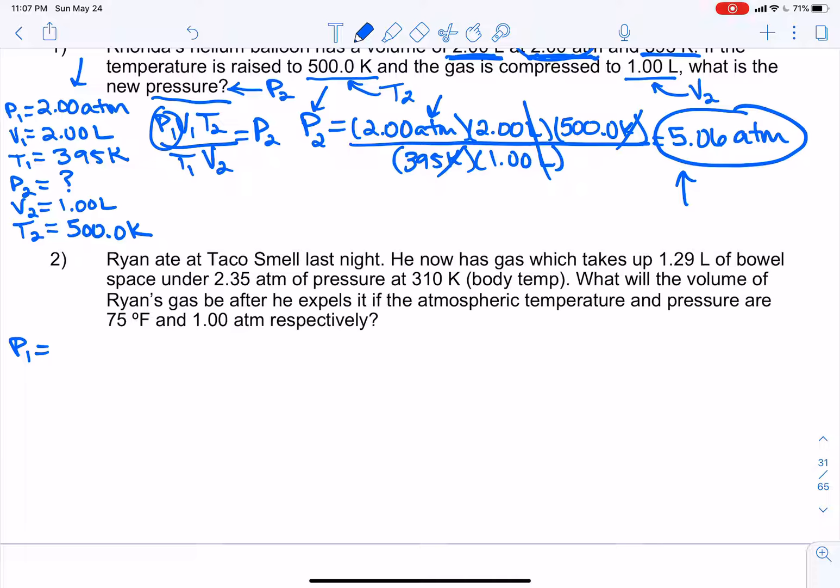Let's go ahead and list our variables so we can organize our facts. So the first pressure. What's our first pressure? Well, it's not 1.29 liters because liters is a unit of what? Of volume. Is it 2.35 atm? Yep. Atm is a unit of pressure. So we have 2.35 atm. And our first volume, we just said it, is 1.29 liters. And our first temperature is 310 Kelvin. And our second pressure is atmospheric temperature, which is 1 atm. And the second volume, we don't know. We're wondering. After that gas comes out of Ryan, what's the volume of it? And T2 is what? 75 degrees Fahrenheit.